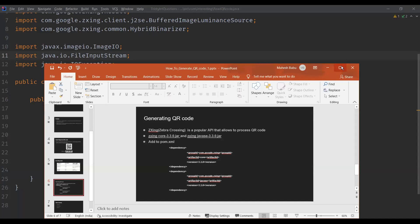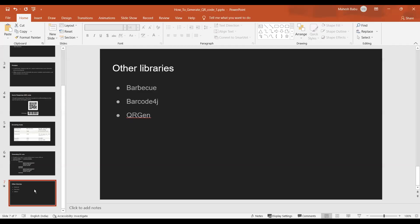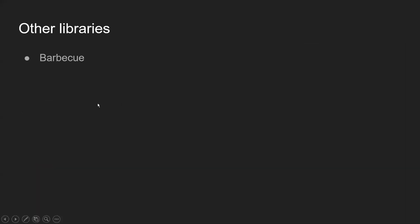Now let's look at other libraries that can be used to generate QR codes. There is Barbecue, an open-source Java library mostly used to generate 1D or linear barcodes. Next is Barcode4J, which can be used to generate both 1D and 2D barcodes. The last one is QRGen, which is built on top of the ZXing library and can also be used to generate QR codes or barcodes.